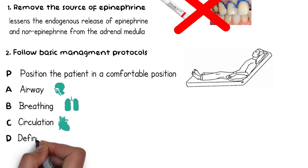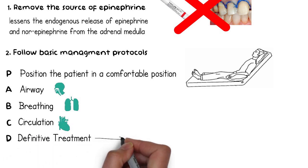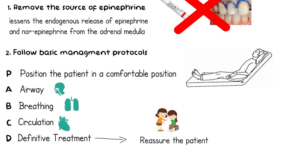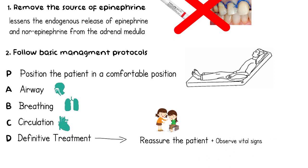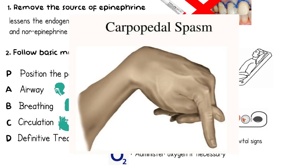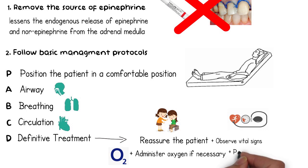After that, definitive treatment is provided. First, reassure the patient that these signs and symptoms are very short-lived and will be over in a short time, as anxiety and restlessness are common clinical manifestations of epinephrine overdose. The vital signs of the patient should be observed and oxygen may be administered. Blood pressure and heart rate should be checked every 5 minutes and any striking elevation noted. Oxygen should be administered only if necessary; however, it should be remembered that oxygen is not indicated in the management of a hyperventilation case, as it can exacerbate symptoms and possibly lead to carpopedal tetany. Finally, the patient should be permitted to remain in the dental chair as long as necessary to recover.